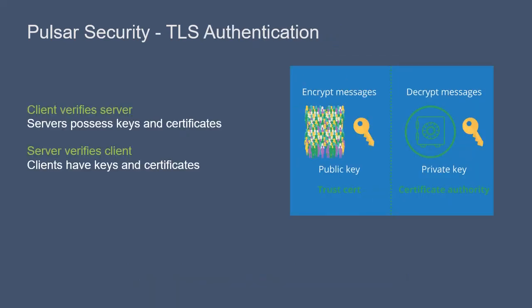Once TLS encryption is configured, TLS authentication can be established. There are two sets of keys and certificates used for TLS authentication. Firstly, servers possess keys and certificates for the client to verify server identity. Secondly, clients also have keys and certificates that the server uses to verify client identity. Both certificates for the clients and servers are generated using the certificate authority. With TLS authentication, the trust cert is used by the server to verify that the client key pair is signed by the certificate authority.